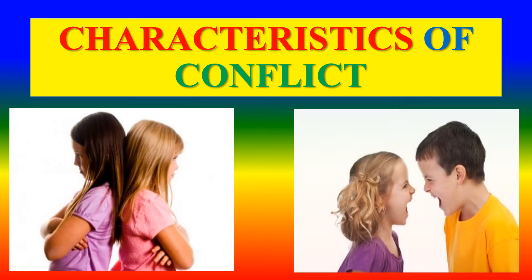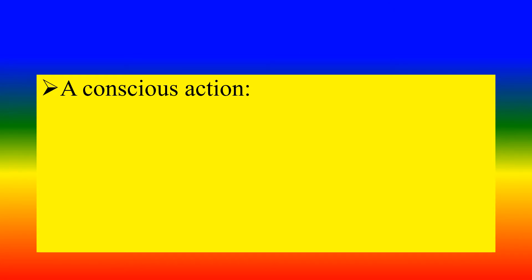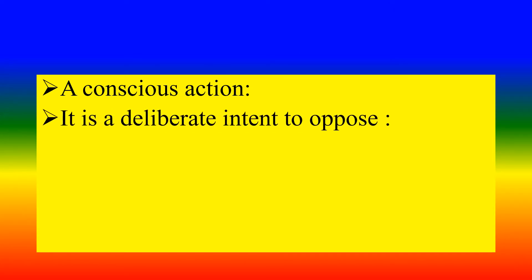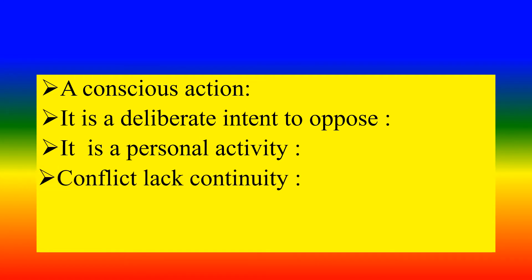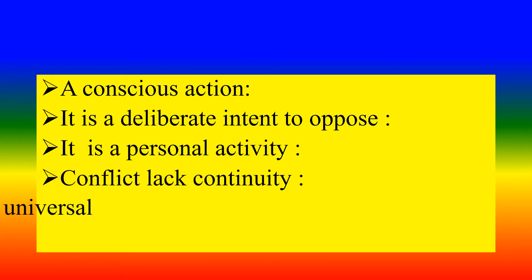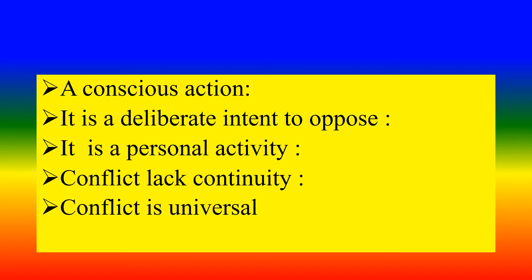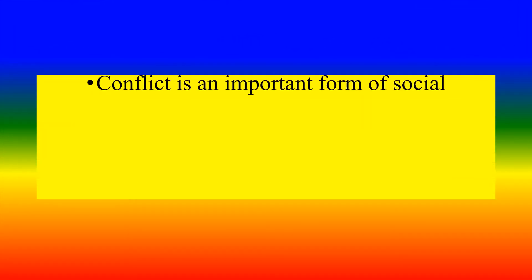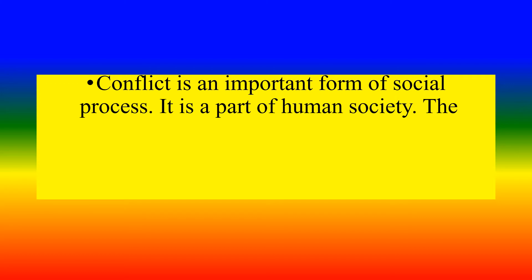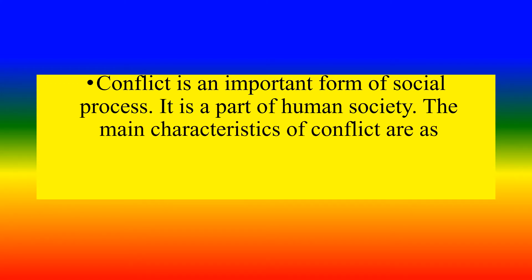Characteristics of Conflict. Conflict is a continuous action. It is a deliberate intent to oppose. It is a personal activity. Conflict is universal. It is an important form of social process and a part of human society. The main characteristics of conflict are as follows.